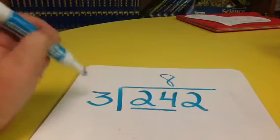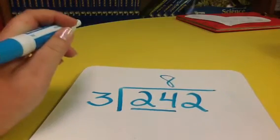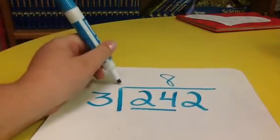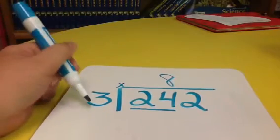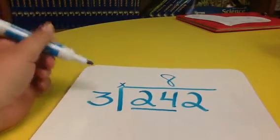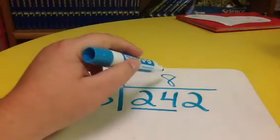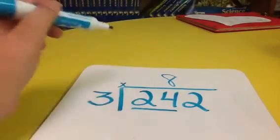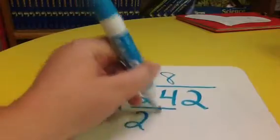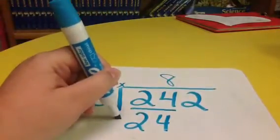Our next step is to multiply. Now I've emphasized with the children when you multiply doing long division, it is always, always, always going to be your divisor and part of your quotient, always. So now we'll take eight times three, which is 24.